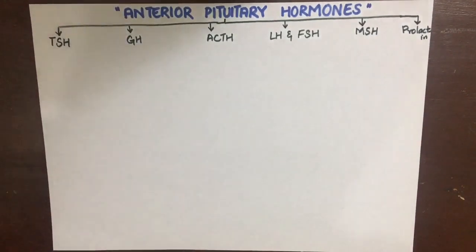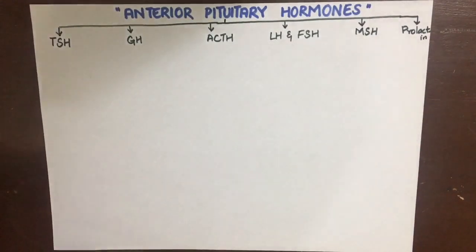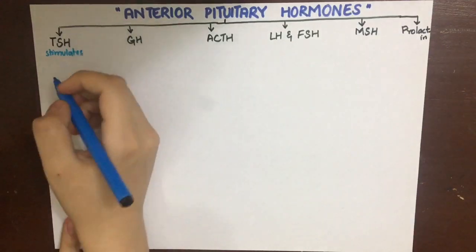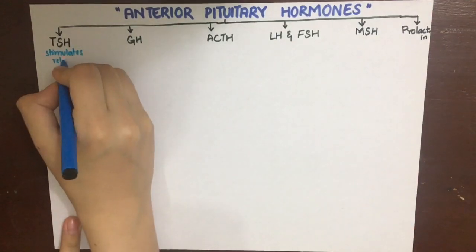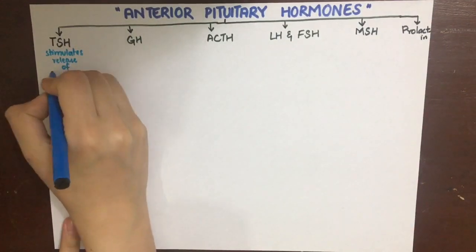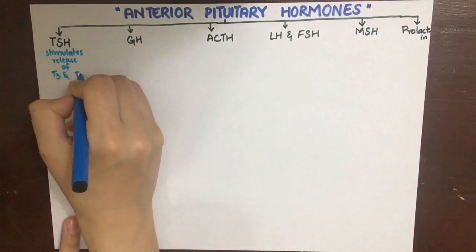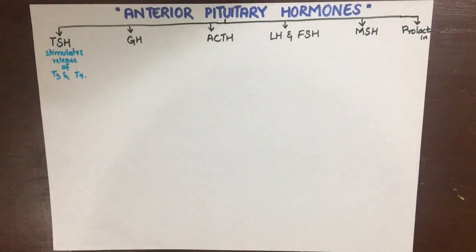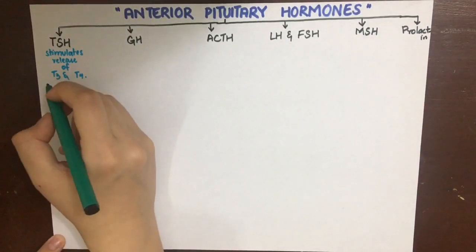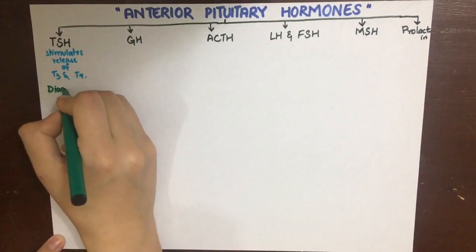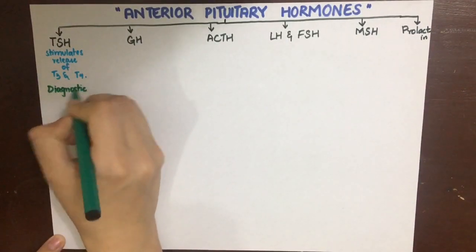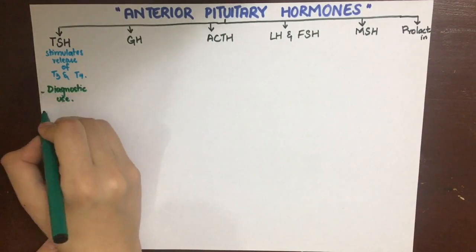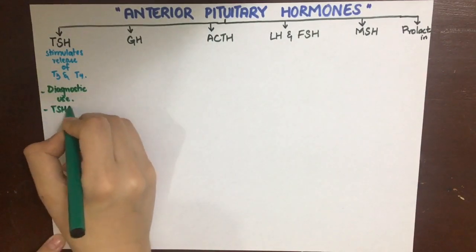First, we'll look at TSH or thyroid stimulating hormone, which stimulates the thyroid to release T3 and T4. Its use is mainly diagnostic in the TSH test, which is a blood test to measure this hormone in hypothyroid and hyperthyroid states.